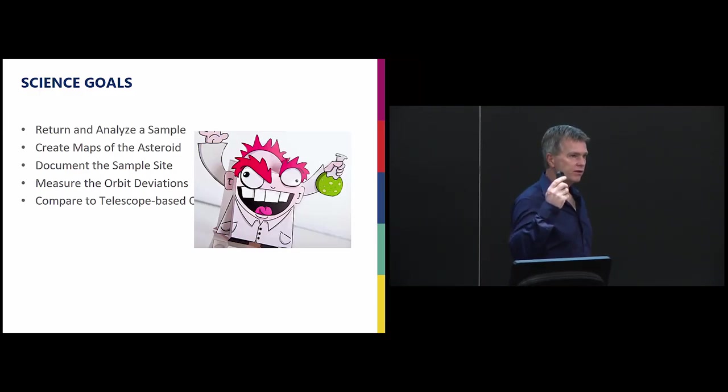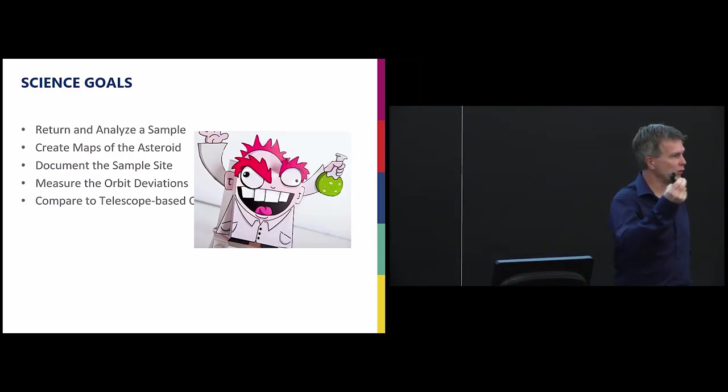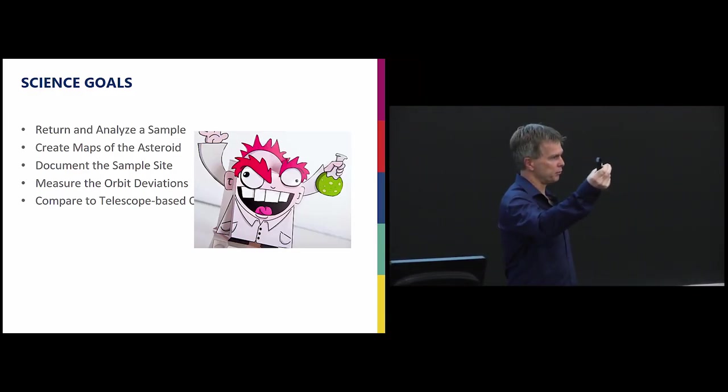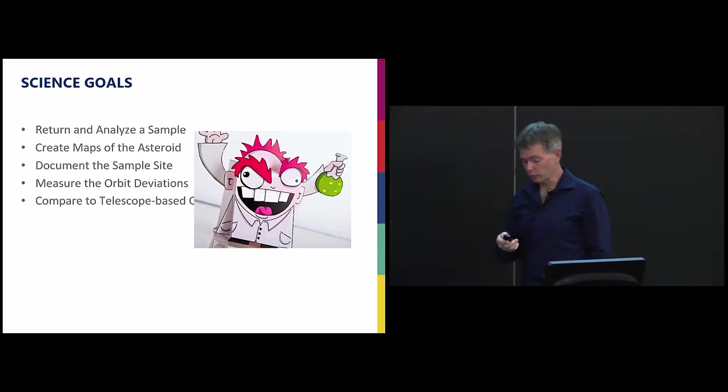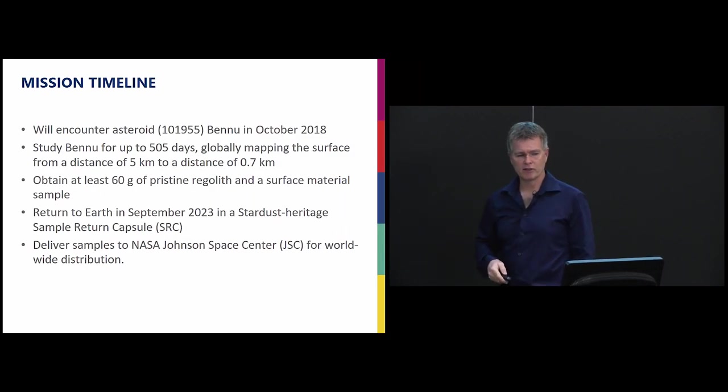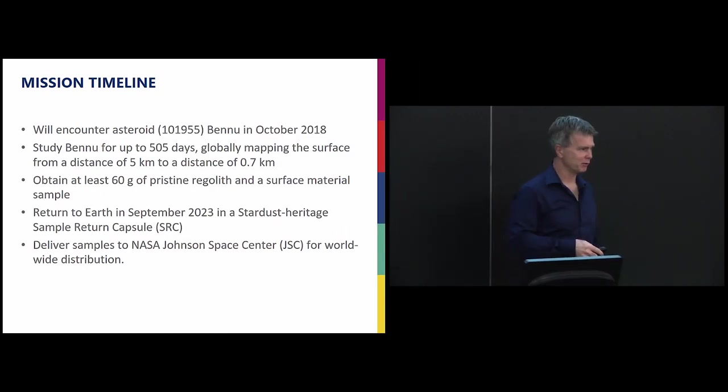And then this is a chance where we can go out and understand in detail this particular asteroid. We have Earth observations of this asteroid and knowledge of the asteroid will let us better infer what other asteroids are that we can't go and visit, but that we have ground-based telescope observations of. And then the measure orbit deviations requires a little bit more explanation.